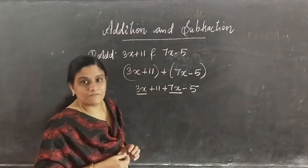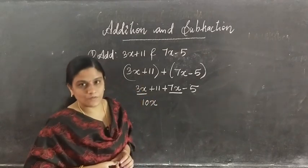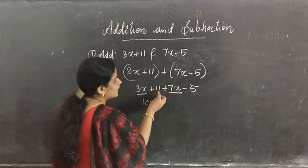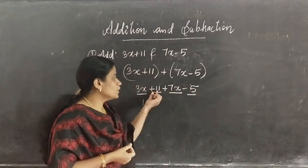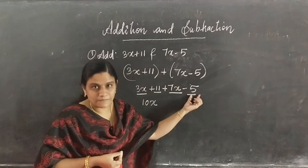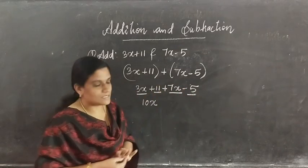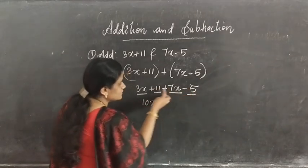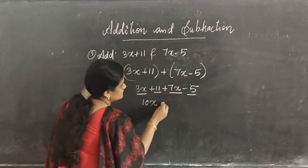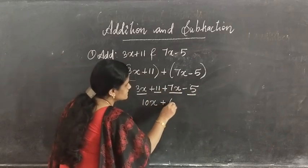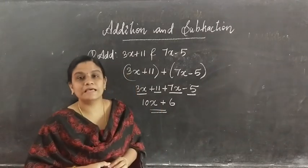So 3x plus 7x gives you 10x. Now the next terms: we have 11 and negative 5. Both are constants, and constants can also be added or subtracted. So 11 minus 5 — what is 11 minus 5? The answer is 6.